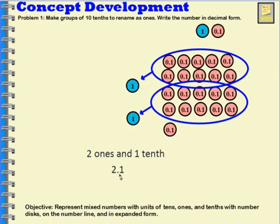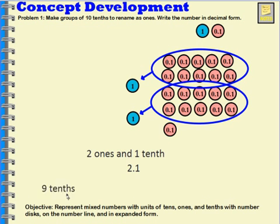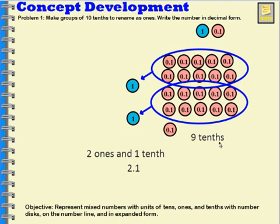In decimal form, I have two and one tenth. How many more tenths would I need to make another whole? I would need nine more tenths — this one tenth plus nine more tenths to make another whole. How do I write nine tenths as a decimal? Zero point nine.